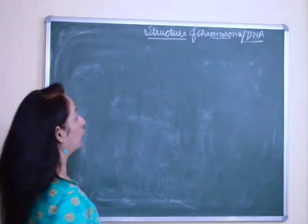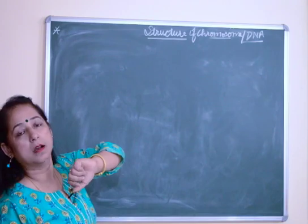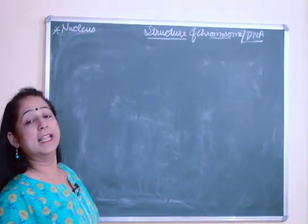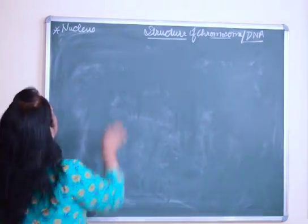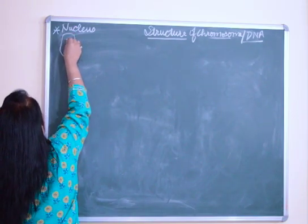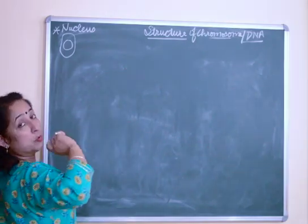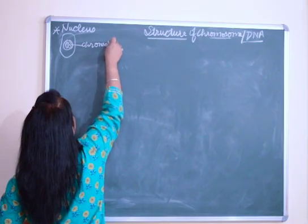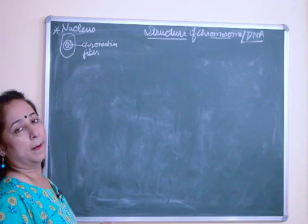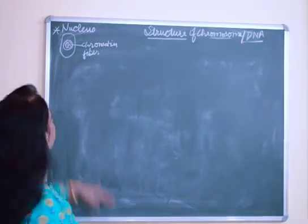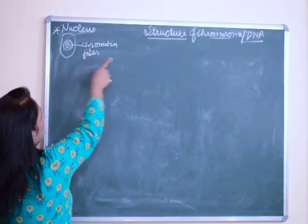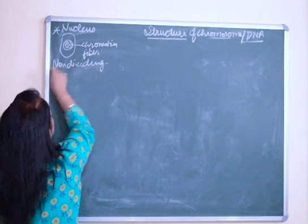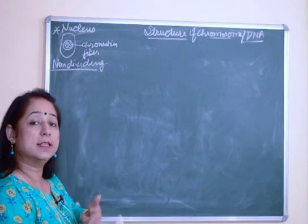Before we start with the structure of chromosome, let's understand what it is and where it is present. It is a genetic material present in the cells, basically present inside the nucleus. Whenever the cell is in a non-dividing state, suppose this is the cell and it has a nucleus — the chromosomes are present here as just thin, fine thread-like structures which we call chromatin fibers. So inside the nucleus, chromatin fibers are present in this non-dividing stage wherein the cell is not dividing.